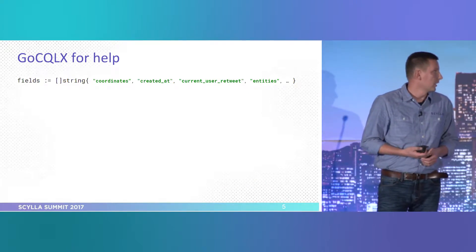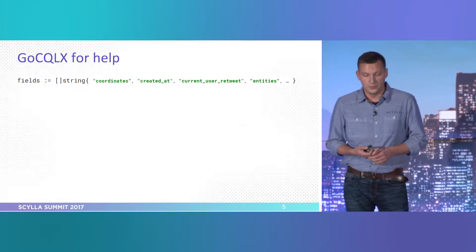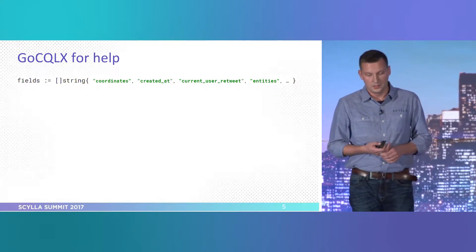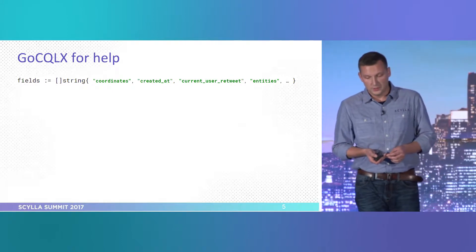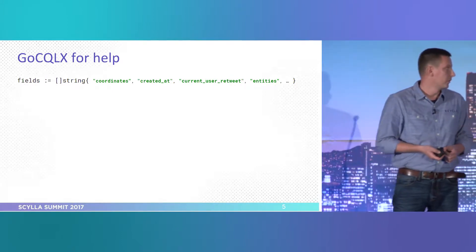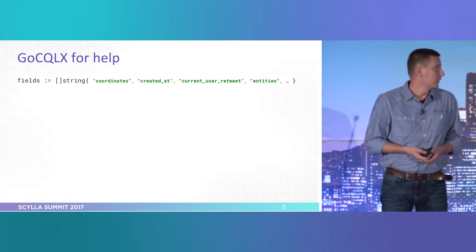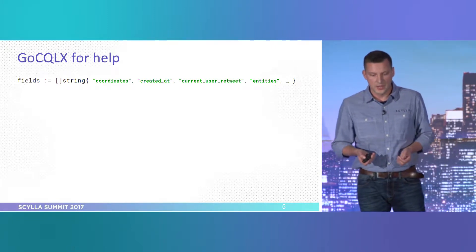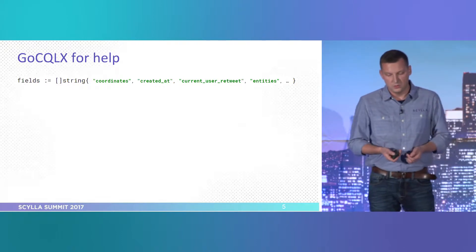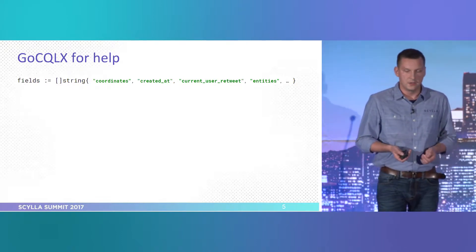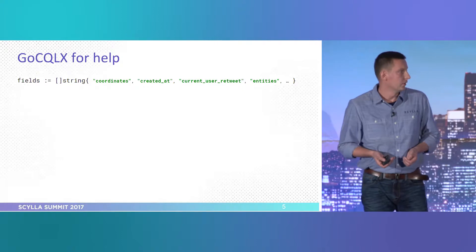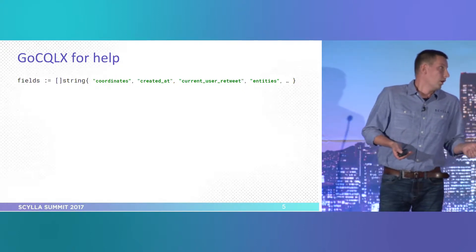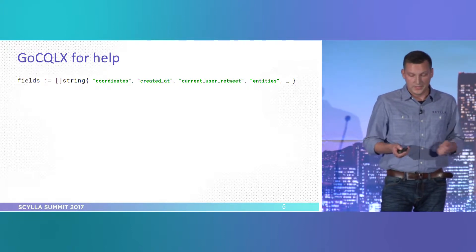So what can GoCQL do for you? We start with the concept of separating concerns. First, we separate metadata — just a list of fields — and you can get it in a few possible ways. Here it's manual, but you can get it directly from the database, or you can use reflection on the struct to actually get those fields.